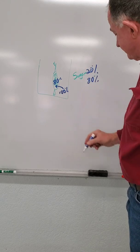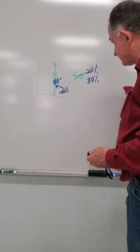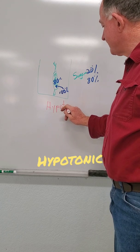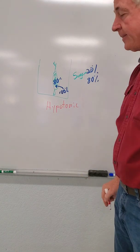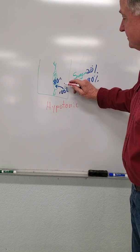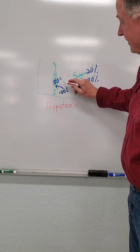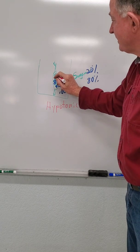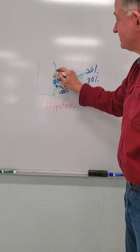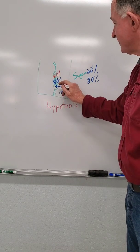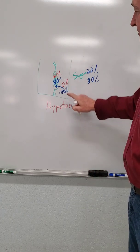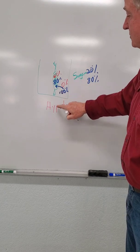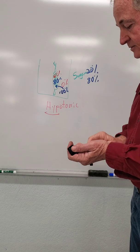This solution then would be called a hypotonic solution. That means that there's less dissolved substances out here than inside. Inside we had 20 percent sugar, outside we had zero percent sugar, so it's less sugar dissolved in the water than inside, which is a hypotonic solution.